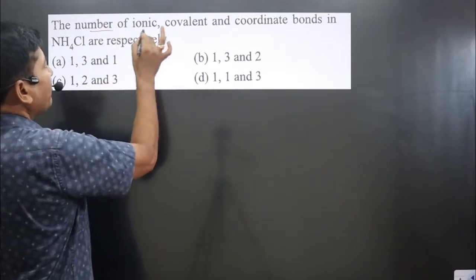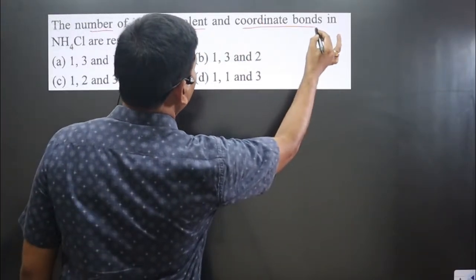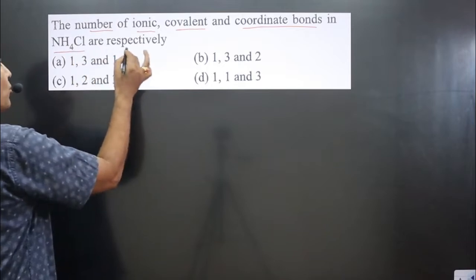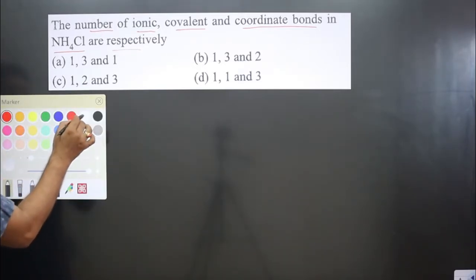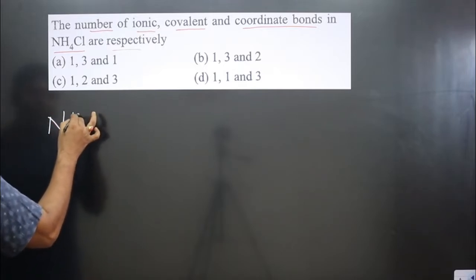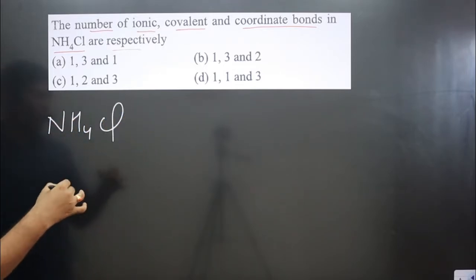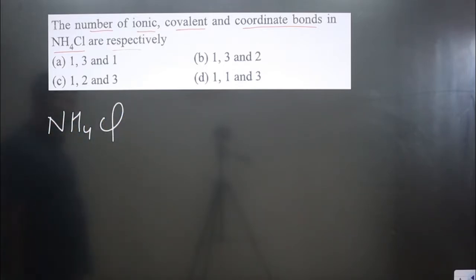The question asks: the number of ionic, covalent, and coordinate bonds in ammonium chloride (NH4Cl) are respectively. All three types of bonds are present. We have to identify how many. Let's draw the structure. Ammonium chloride is a salt, which means it will dissociate into ions.